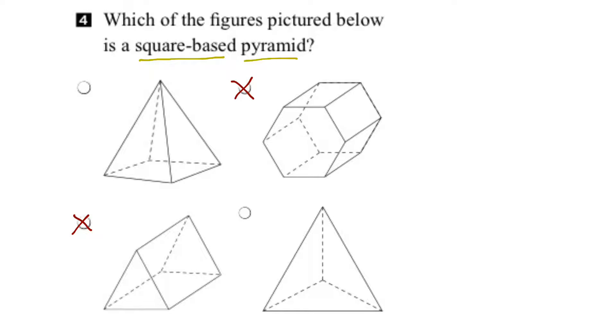Now let's compare the bases of those two figures that are left. Well, if I look at the one down here and draw the base, which is this part here, we'll see that it makes a triangle. And this figure is called a triangular-based pyramid. And because it doesn't have a square base, we can eliminate that one too.